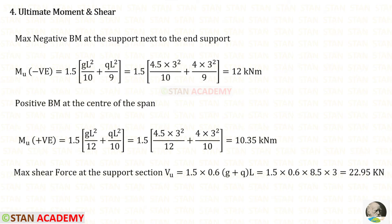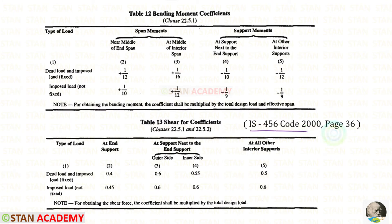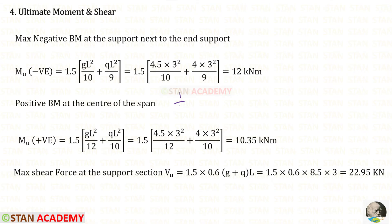Now we are going to find the ultimate moment and shear. First, we need to find the maximum negative bending moment at the support next to the end support. From the code book page 36, the coefficient for dead load is 1/10 multiplied by GL², and for live load it is 1/9 multiplied by QL².